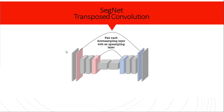For every downsampling layer in the network, we need to pair it with a corresponding upsampling layer. Looking at this figure, the downsampling layer is shown in red and its paired upsampling layer appears in blue at the matching position. That is essentially how SegNet works.